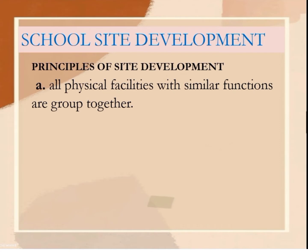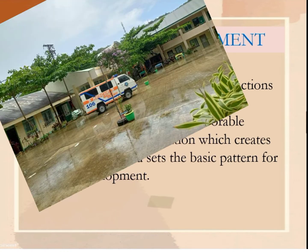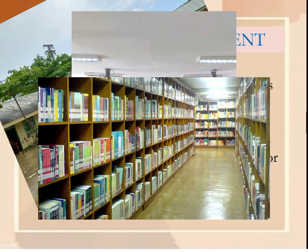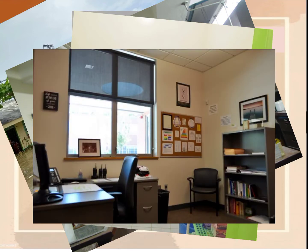There are principles of site development. First, all physical facilities with similar functions are grouped together. This is in accordance with the most favorable options for grounds utilization, which creates functional zones and sets the basic patterns for physical development. Physical facilities refers to the school plan — that is, school buildings, classrooms, libraries, laboratories, toilet facilities, offices, and other materials and infrastructures.